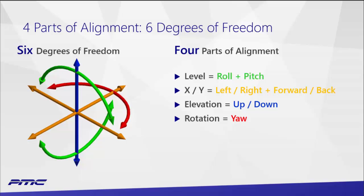There are really four parts we care about, and they translate to what's more conventionally known as the six degrees of freedom in computer science. We can think of level as control over roll and pitch; our XY location is set with left-right and forward-back from our zero-zero point; elevation is up and down; and rotation, or yaw. Combined, these are the four things we need to manipulate to establish the location of our data.